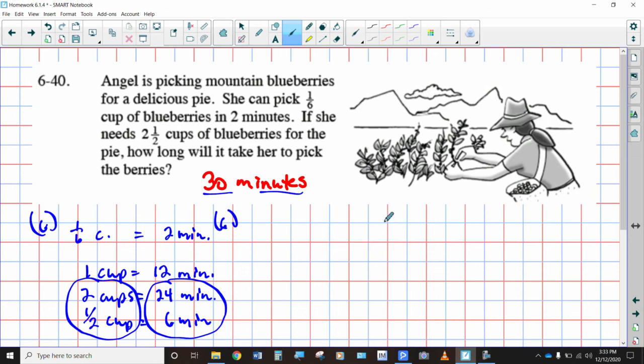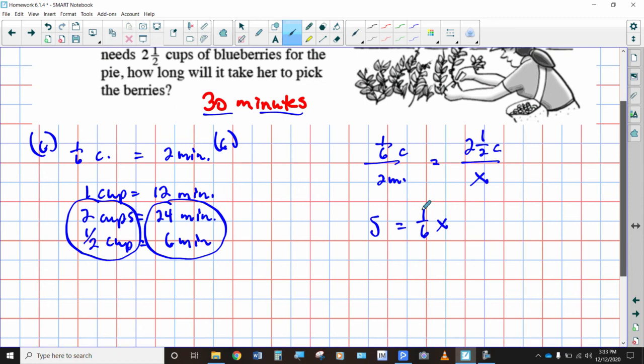You could also just set it up this way. 1 sixth of a cup in 2 minutes, right, would be equal to 2 1/2 cups in how many minutes? So if I multiply these guys together, you get 5 is equal to 1 sixth of x. And now to solve, multiply everything times 6, and we get 30 is equal to 1x. Same answer that we got there, just different ways that you can approach the problem.